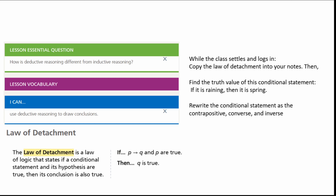The law of detachment simply is a law of logic that states if a conditional statement and its hypothesis are true, then its conclusion is also true. So what we have here is if P implies Q and P are true, then Q is true. And that sounds a lot like what we did in our last video, but now instead of looking at P and Q to be true to see if P implies Q is true, we're going to look at our hypothesis and see if our implication is true to determine what our conclusion will be.